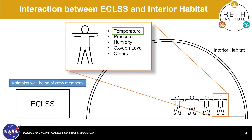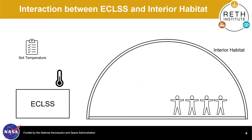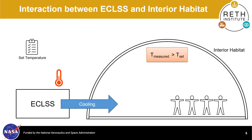Interaction between ICLESS and the Interior Habitat System takes place in a very simple manner. ICLESS receives temperature measurement information from the Interior Habitat System and compares that to the set point temperature. Assuming that it has a sufficient power supply, ICLESS will provide cooling to the habitat if the measured temperature is higher than the set point temperature, and will provide heating if the measured temperature is lower than the set point temperature.